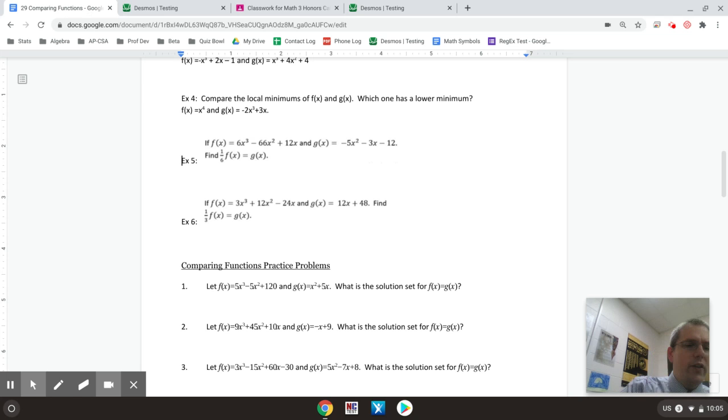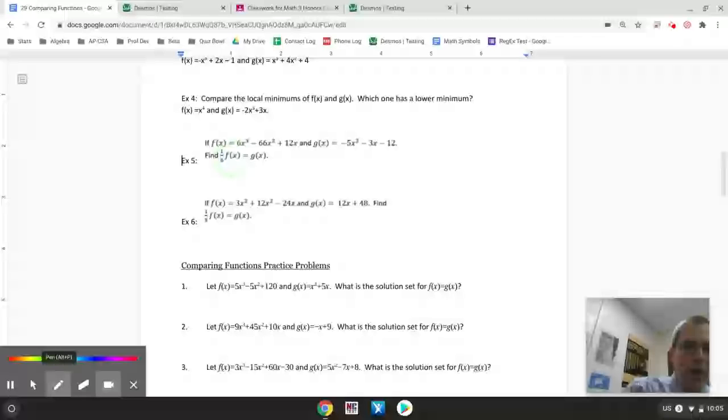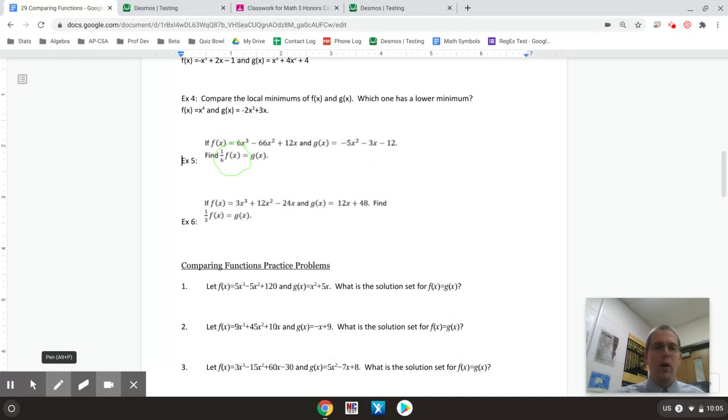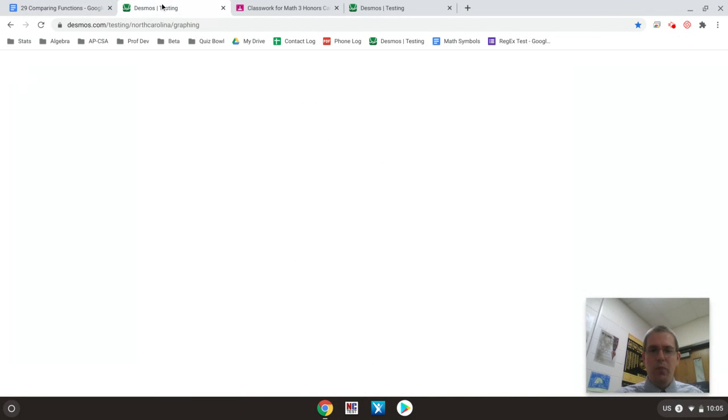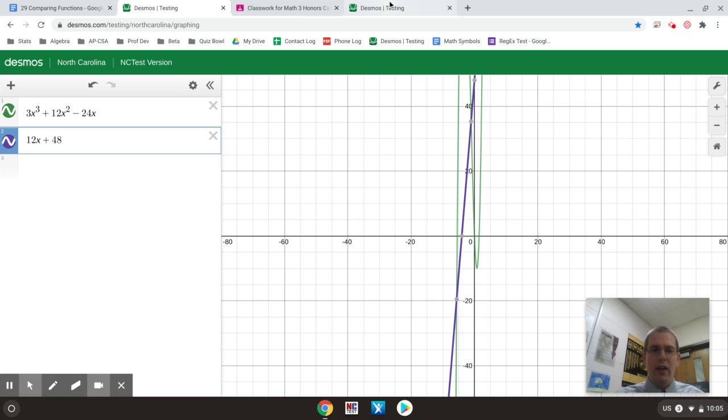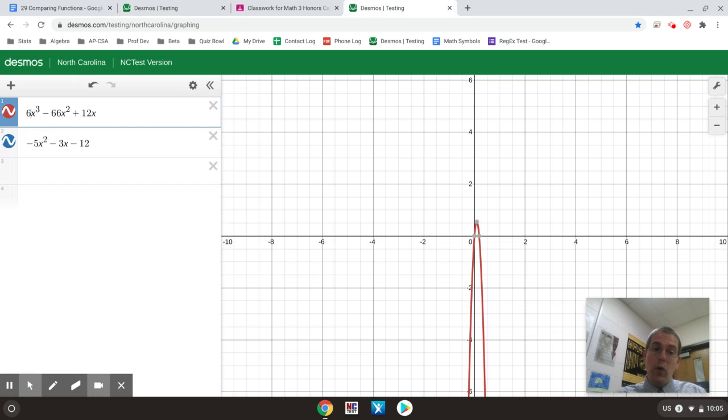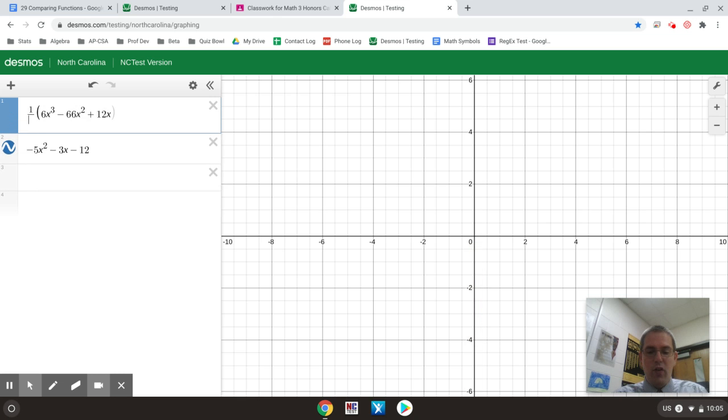I noticed on this one that it didn't actually ask for where f of x equals g of x. It asked for where 1/6 of f of x is. So I need to make a modification. There's a couple ways I can do this in Desmos. One way is to just literally type a 1/6 in front of that entire equation. You notice I open the parenthesis, type the 1/6 in front, and then it will automatically close the parenthesis for me.